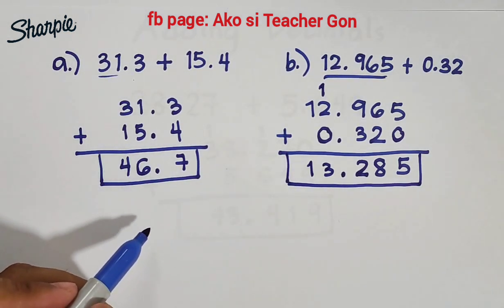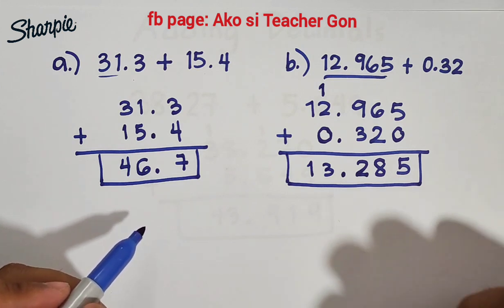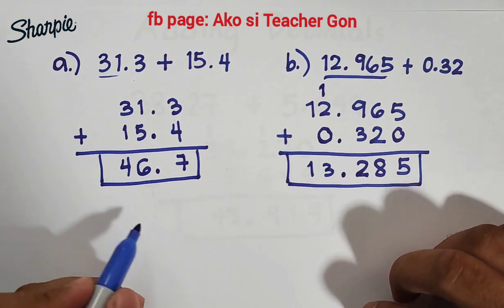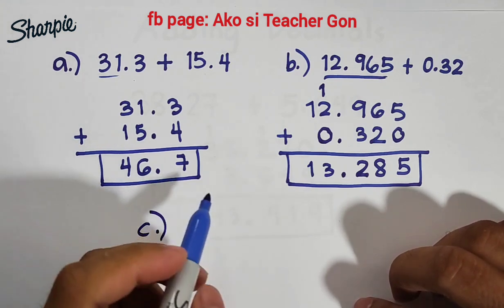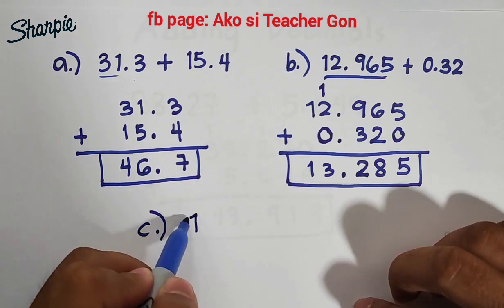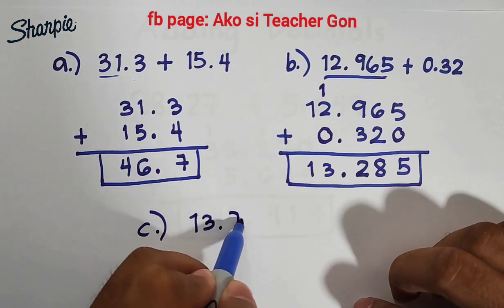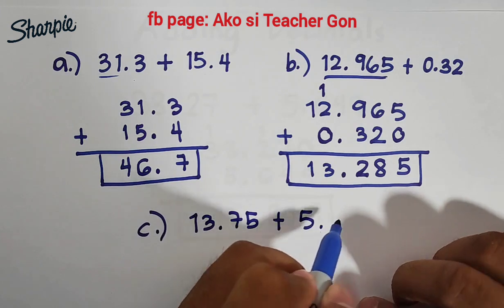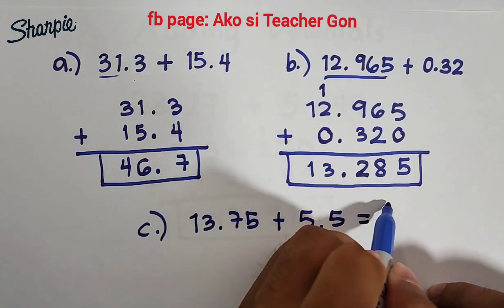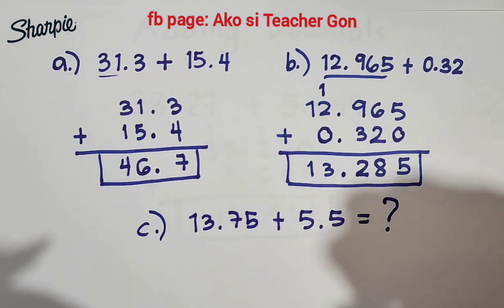So now I will give you a task wherein you need to add these decimals. So I hope that I'll see in our comment section you will try answering letter C which is 13.75 plus 5.5. So what is the answer here guys? I hope I'll see your answer in the comment section.